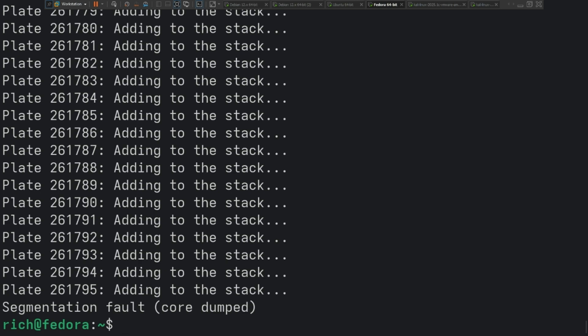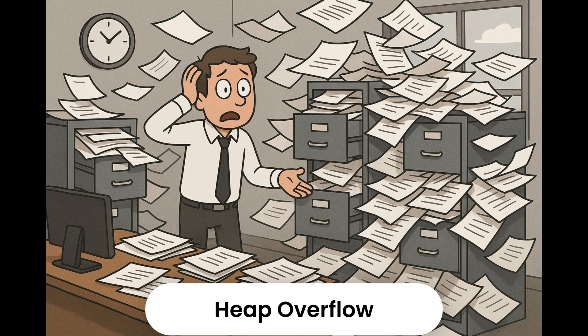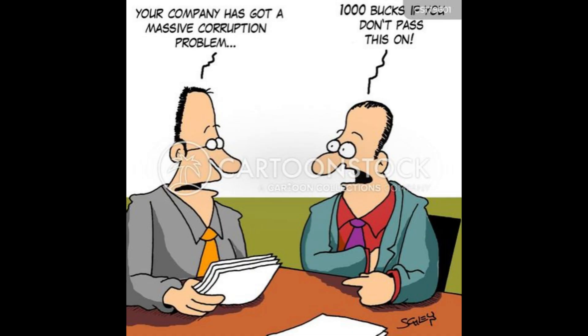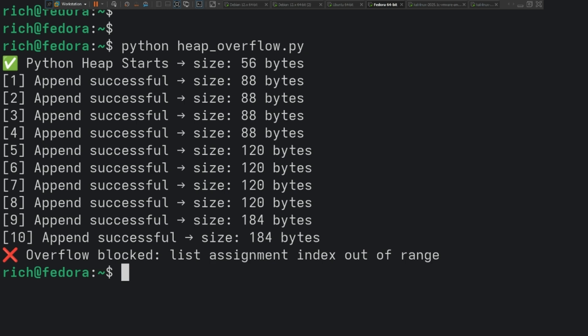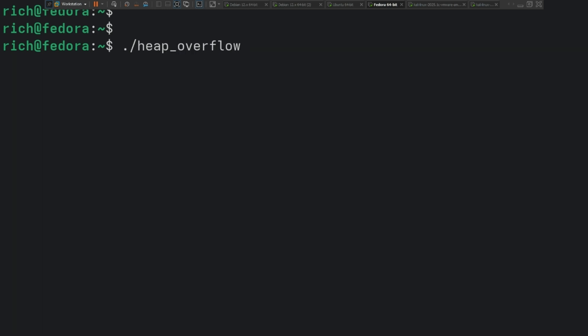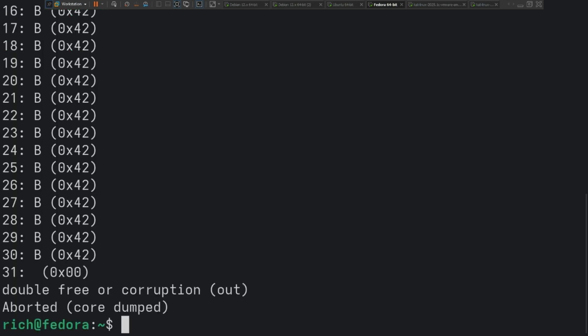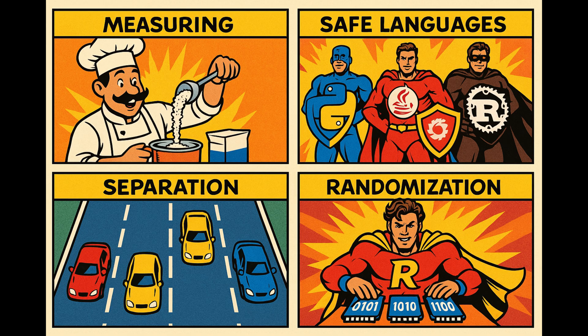Or worse, until hackers find a way to exploit the chaos. Heap overflow attacks target the memory space where programs store data dynamically — think of it as the workspace where programs keep their temporary files. When a program writes past the end of its allocated workspace, it can corrupt neighboring data, sometimes crashing the program, other times giving attackers a way to inject malicious code. Safe languages build walls to contain these spills; unsafe languages let the corruption spread silently.